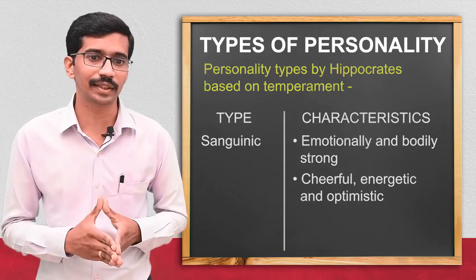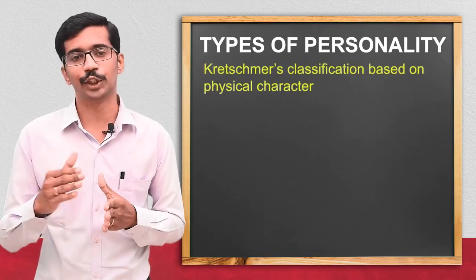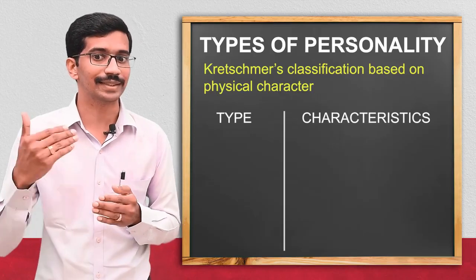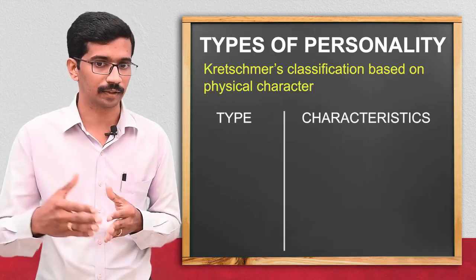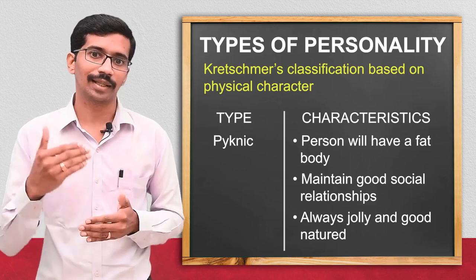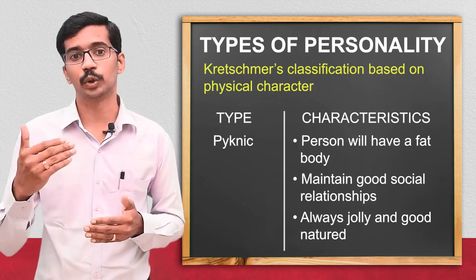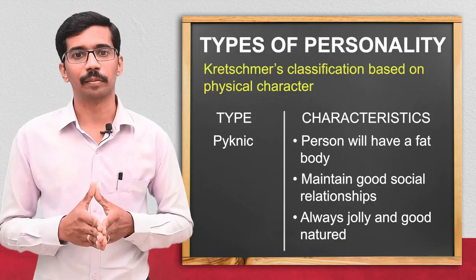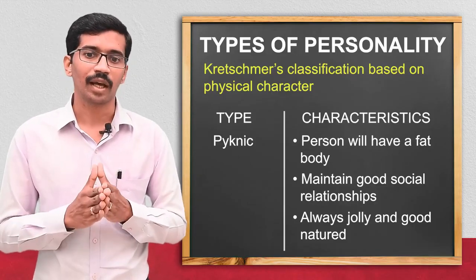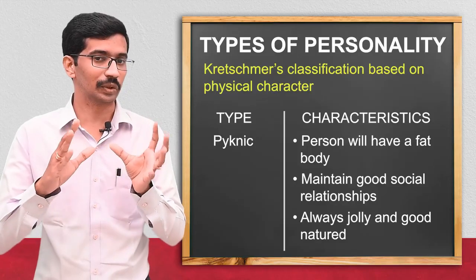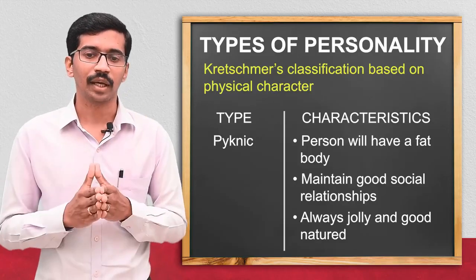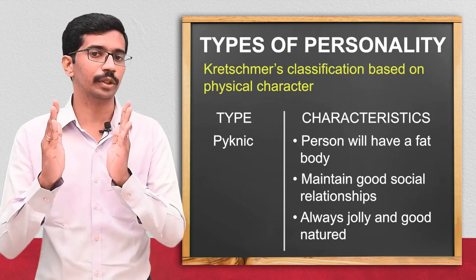Coming to the next classification, which is given by Kretschmer. Kretschmer classified personality based on physical characters and divided personality into picnic type, athletic type, and leptosomatic type. The picnic type person will be having a stout body and will be maintaining social relationships very well — always jolly and good-natured.